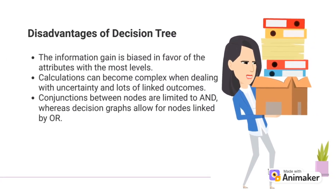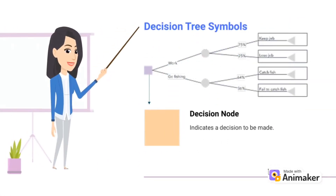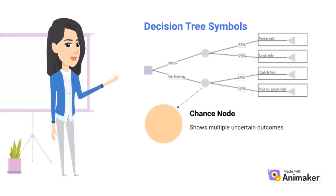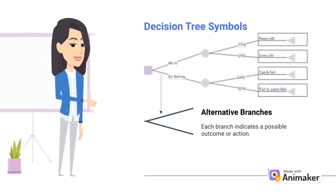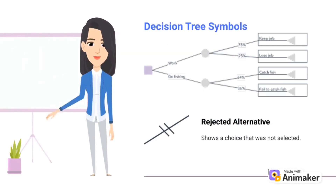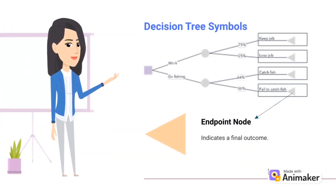Before we go deeper into this topic, let's understand the meaning of each shape. The first shape is the decision node, which indicates a decision to be made. The second one is the chance node, which shows multiple uncertain outcomes. Next is alternative branches, where each branch indicates a possible outcome or action. This shape means a choice that was not selected, namely a rejected alternative. And the last one is the endpoint node, which indicates a final outcome.